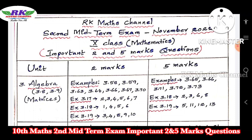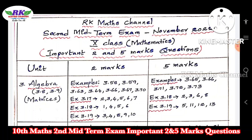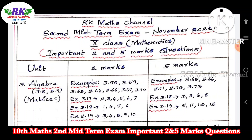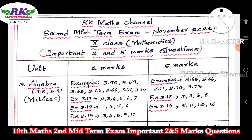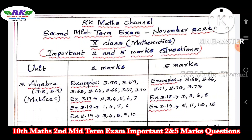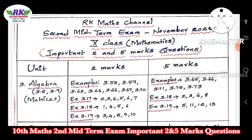For algebra, the topics are 3.8 and 3.9. The exercise content covers pages 3.8 and 3.9 topics — quantity graphs and matrices. Key exercises include 3.17, 3.18, and 3.19, along with examples up to 3.65. Important problems are from exercises 3.18 and 3.19. Next is matrices.